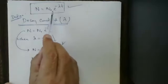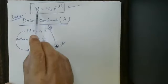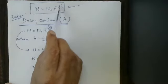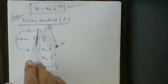This formula we already derived yesterday. N is the number of atoms present at a given instant of time after some sufficiently lengthy time interval. N₀ is the initially present number of atoms when t equals 0. T is the time, lambda is the decay constant. This is the formula.